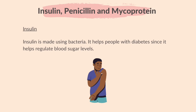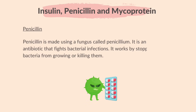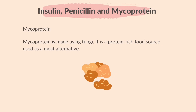Insulin is made using bacteria. It helps people with diabetes since it helps regulate blood sugar levels. Penicillin is made using a fungus called Penicillium. It is an important antibiotic that fights bacterial infections by stopping bacteria from growing or by killing them. Mycoprotein is made using fungi. It is a protein-rich food source used as a meat alternative.